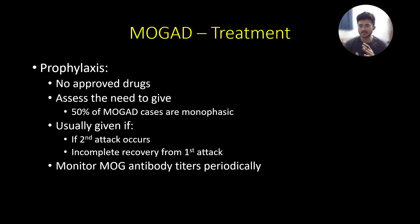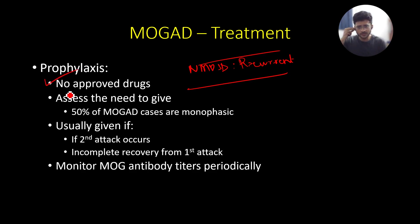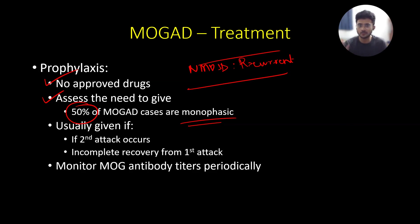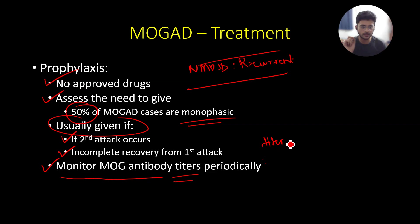Prophylaxis in MOGAD is trickier than in NMOSD. NMOSD is universally recurrent, so prophylactic agents are always started after an acute attack. However, there are no approved prophylactic medications for MOGAD — most are used off-label. Since 50 percent of MOGAD patients are monophasic, you shouldn't unnecessarily give immunosuppressive medications. Consider prophylaxis if the patient has a second attack, or if there is incomplete clinical recovery from the first attack. Monitor MOG antibody titers periodically — a falling titer trend suggests significantly low risk of relapse.